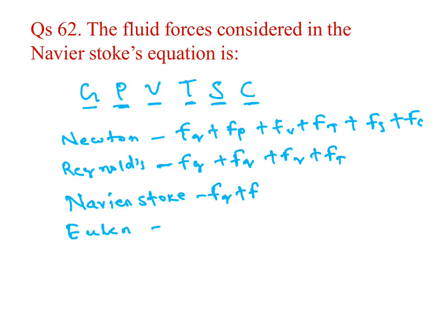Navier-Stokes equation includes force due to gravity, force due to pressure, and force due to viscosity — the first three. G, P, V, T, S, C: Navier-Stokes is G, P, V. Then if you cut viscosity, you get Euler's equation with just gravity and pressure forces. The question asked for Navier-Stokes equation — gravity, pressure, viscosity.